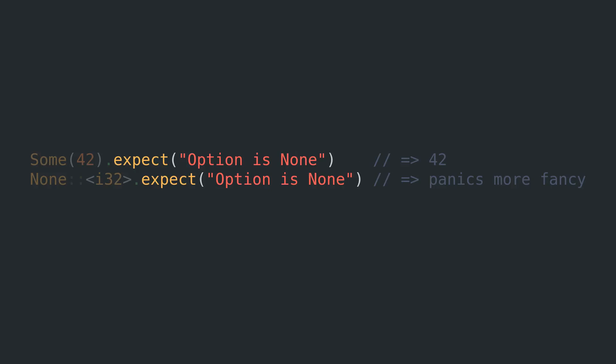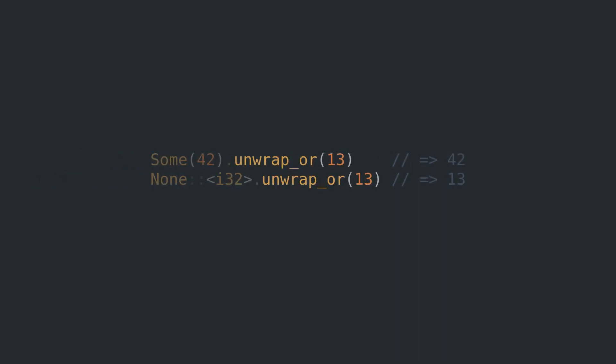Let's get real here. Panicking all the time is way less fun than it sounds, so we should probably use some grown-up functions. How about unwrap_or, which lets you provide a fallback value in case you unwrap a None value.